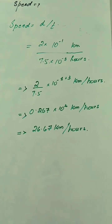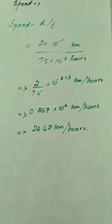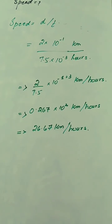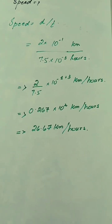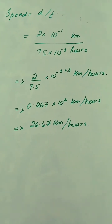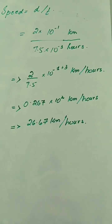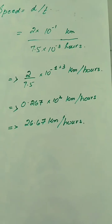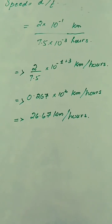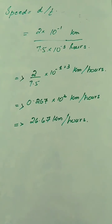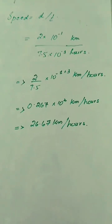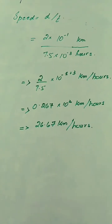For the powers of 10: 10⁻¹ divided by 10⁻³ — the 10⁻³ in the denominator moves to the numerator, changing sign to +3, giving 10². So 0.267 × 10² = 26.67 km/h, which is the speed.